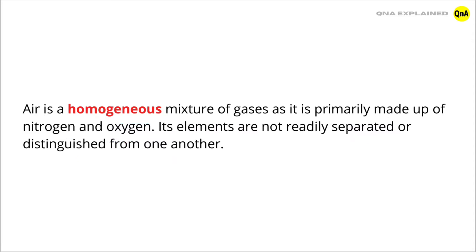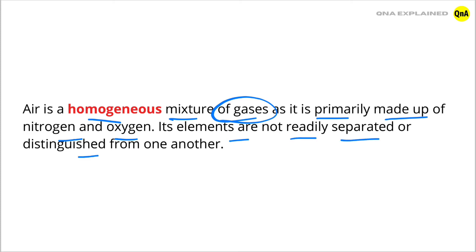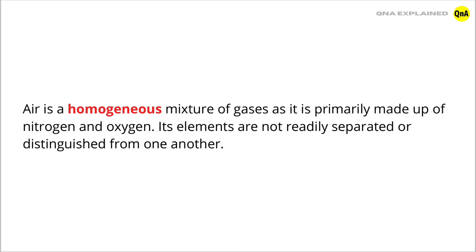Air is a homogeneous mixture of gases as it is primarily made up of nitrogen and oxygen. Its elements are not readily separated or distinguished from one another. So the answer is: air is a homogeneous mixture of gases.